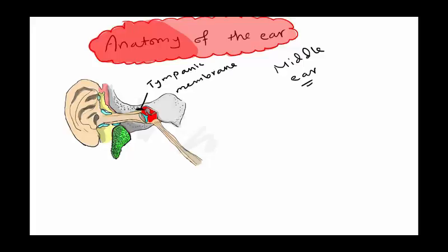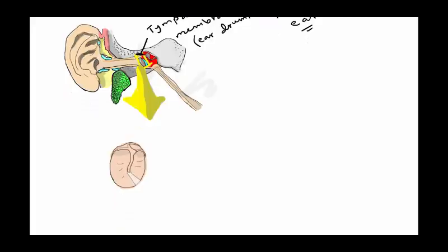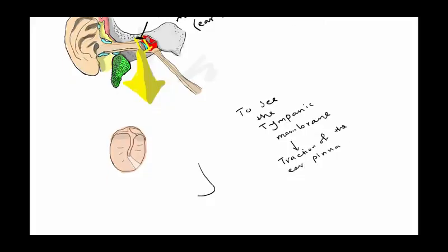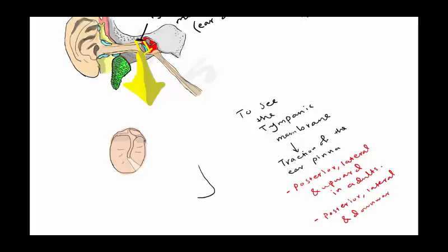The middle ear is located medially to the external auditory canal and the tympanic membrane. To see the tympanic membrane clearly, we have to pull the ear pinna — we have to apply traction to the ear pinna. In adults we should do posterior, lateral, and upward traction of the ear pinna, and in pediatrics posterior, lateral, and downward.